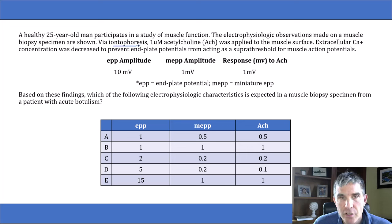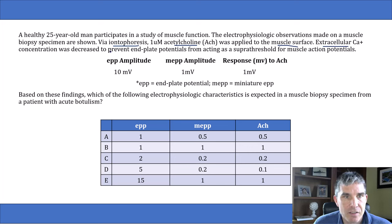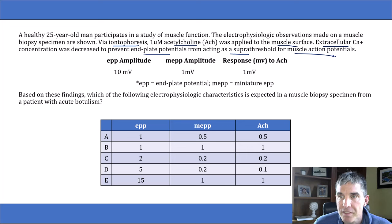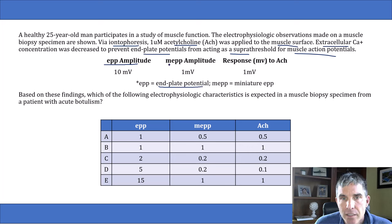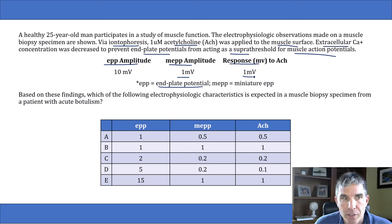They tell you that they use iontophoresis to apply acetylcholine to the muscle surface. Then they have this super confusing sentence that says: extracellular calcium concentration was decreased to prevent end plate potentials from acting as a super threshold for muscle action potentials. But setting all that aside, we have some data here for the healthy man. His EPP amplitude — the end plate potential — is 10. His MEPP amplitude is 1 millivolt. And the response of his normal healthy muscle tissue to acetylcholine is 1 millivolt. Then they ask you: what findings would you expect in someone who has acute botulism?